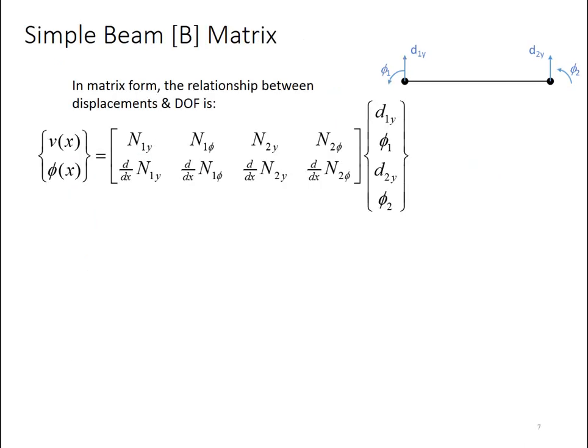Once we have the shape functions, we can work through the process of defining the B matrix, or the strain nodal displacement matrix. In order to get there, we need to know the partial derivative matrix operator. I'll talk about that in a moment. But we also need to define the shape function matrix. I've gone ahead and shown you the shape function matrix here. It's simply restating what we had in the prior slide. So v(x) is just equal to d1y times n1y plus phi1 times n1_phi, and so on. And then phi(x) is equal to something very similar, except it's the derivative of each of the shape functions.